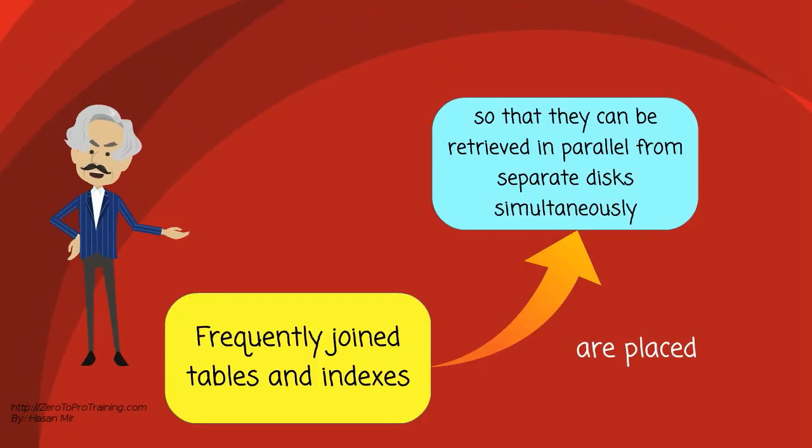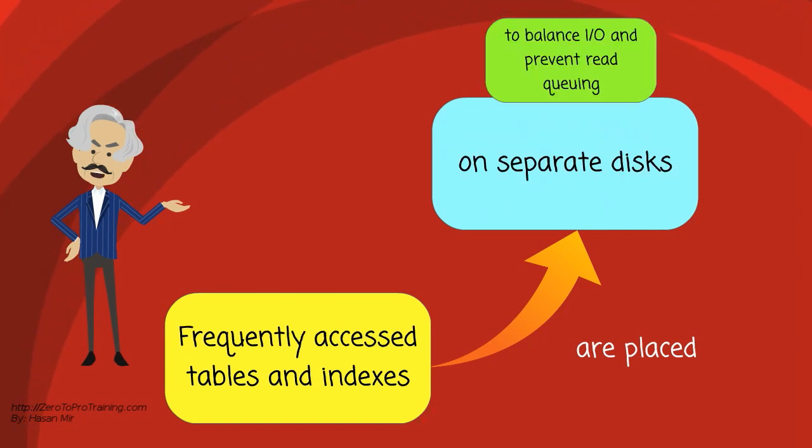Frequently joined tables and indexes are placed so that as they are requested from file storage, they can be retrieved in parallel from separate disks simultaneously. Frequently accessed tables and indexes are placed on separate disks to balance I/O and prevent read queuing.